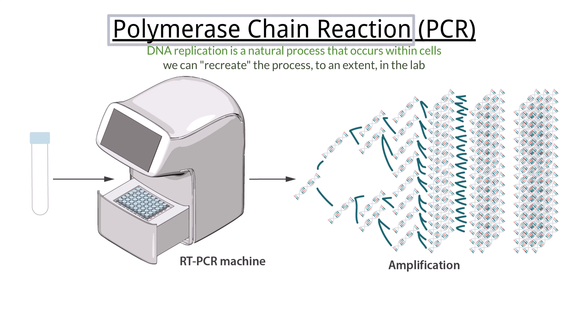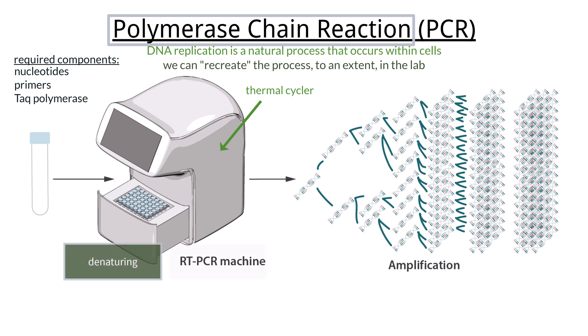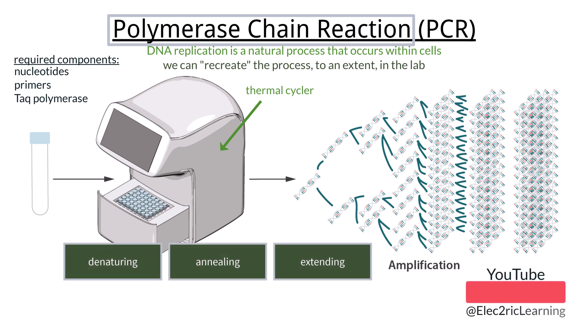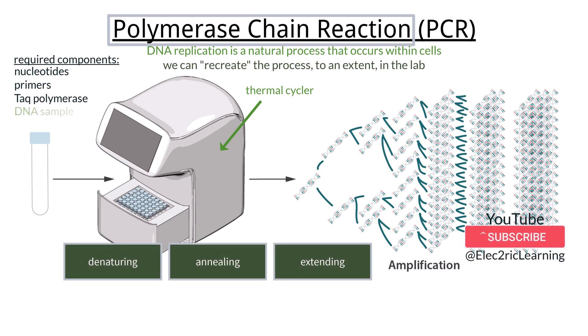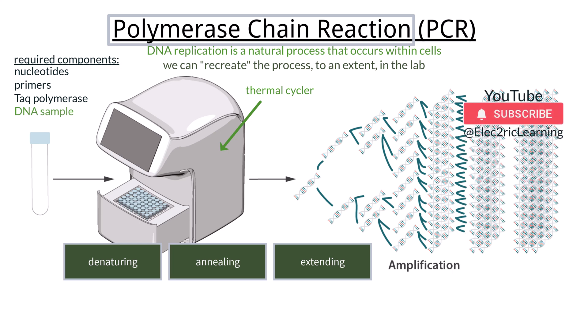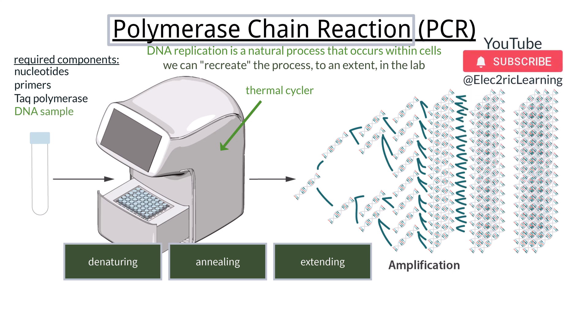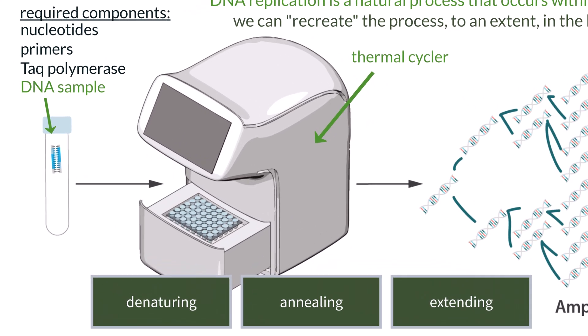This process involves a special machine called a thermal cycler, specific components like free-floating nucleotides, primers, and an enzyme called Taq polymerase, and is completed through three different steps called denaturing, annealing, and extending. To make it all work, we must have a DNA sample — we can't replicate DNA without first having a DNA section to replicate. So we have the DNA sample that we want to make copies of.